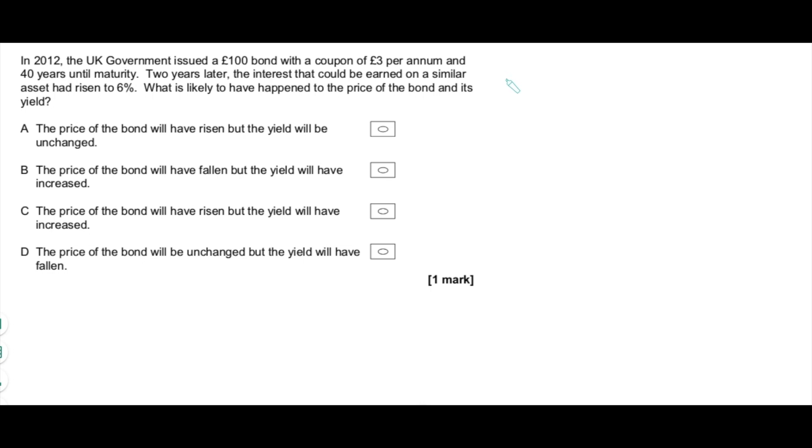And now, guys, a question like this that links to government bonds. This again is super simple. Have a quick read of this. You can see a bit of background first that the government has issued a hundred pound bond with a coupon of three pounds per annum, 40 years to maturity. And then two years later, other assets are giving yields of 6%. What's going to happen to the price of this bond and the yield? So what we need is the yield equation. Very important. And here it is.